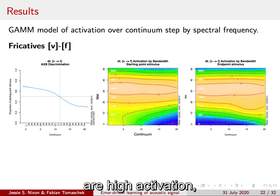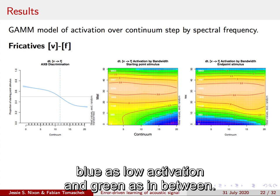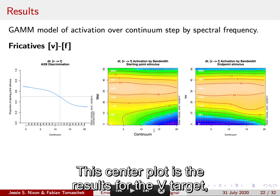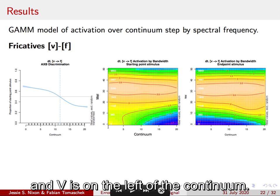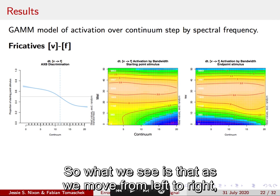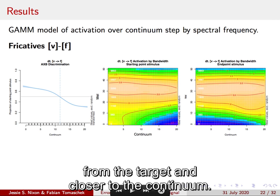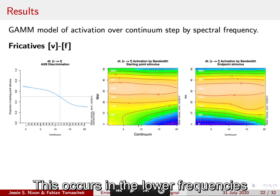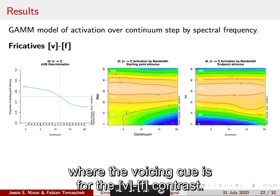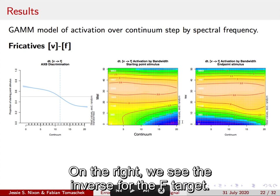This center plot is the results for the V target. V is on the left of the continuum. So what we see is that as we move from left to right activation gets lower as we get further away from the target and closer to the competitor on the continuum. This occurs in the lower frequencies where the voicing cue is for the V-F contrast. On the right we see the inverse for the F target.